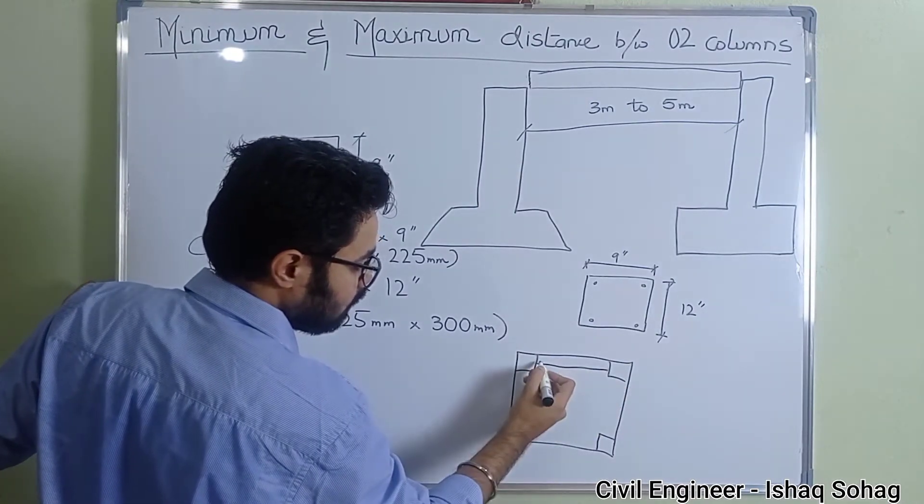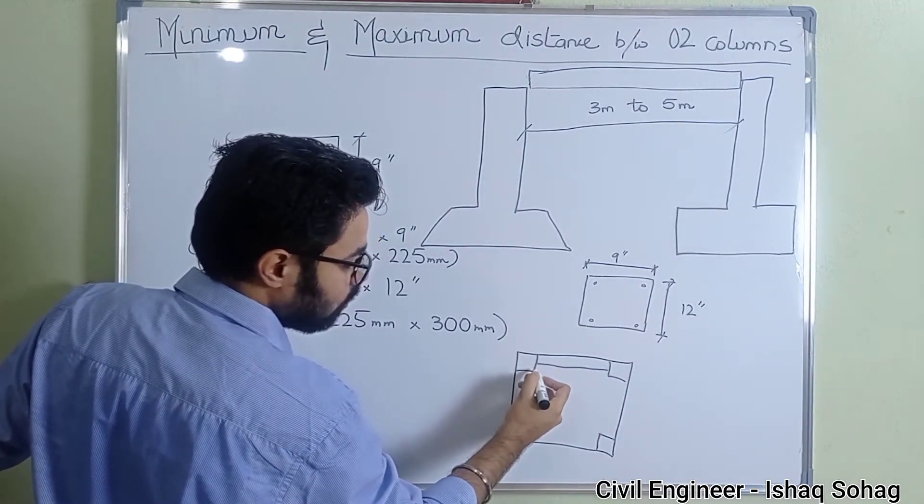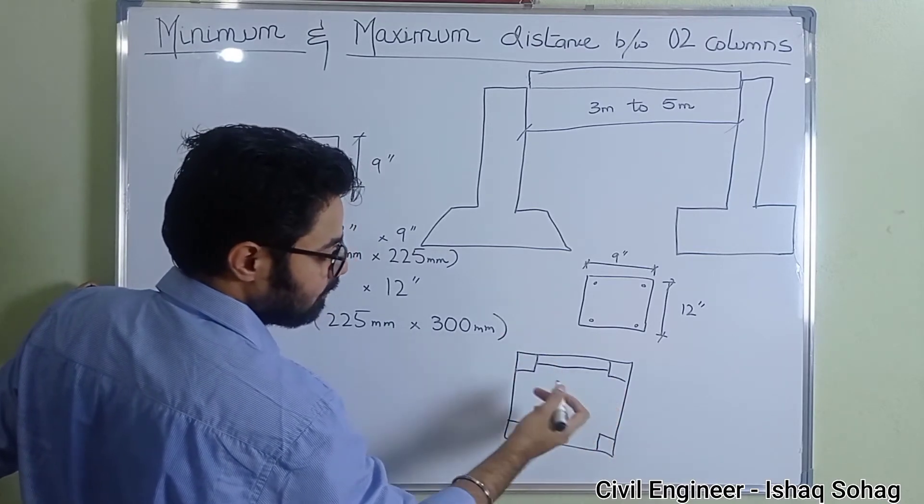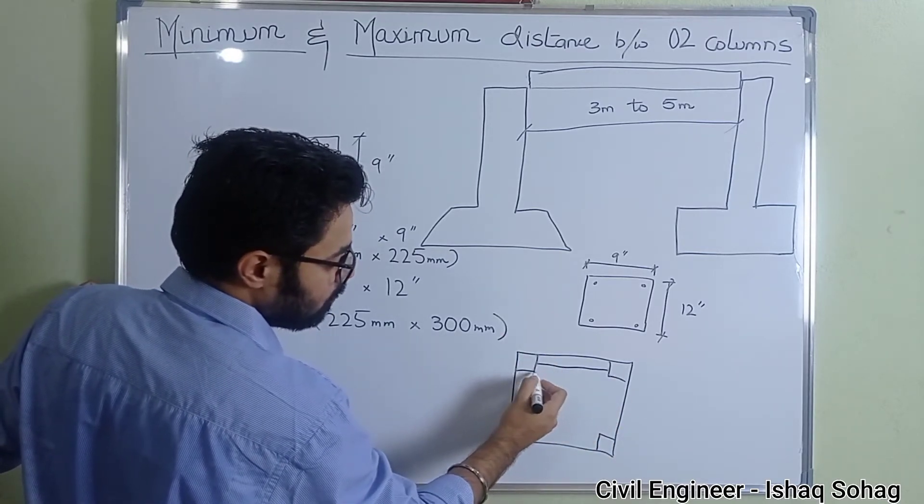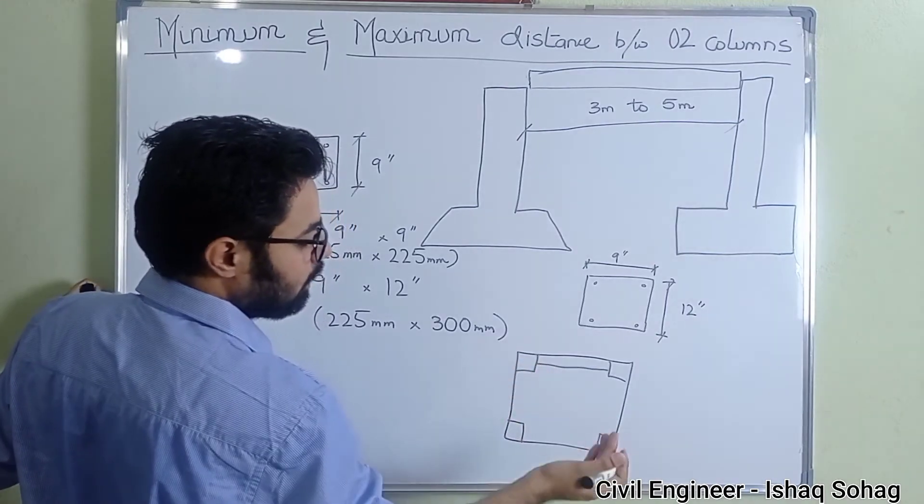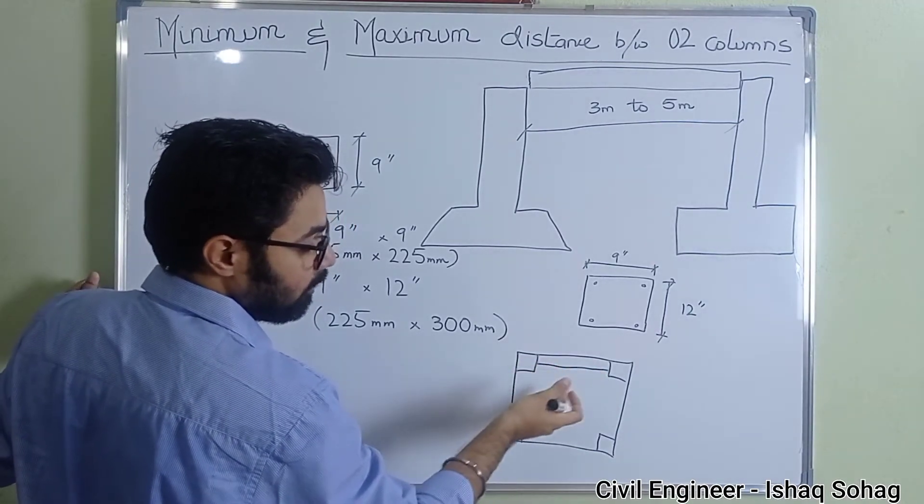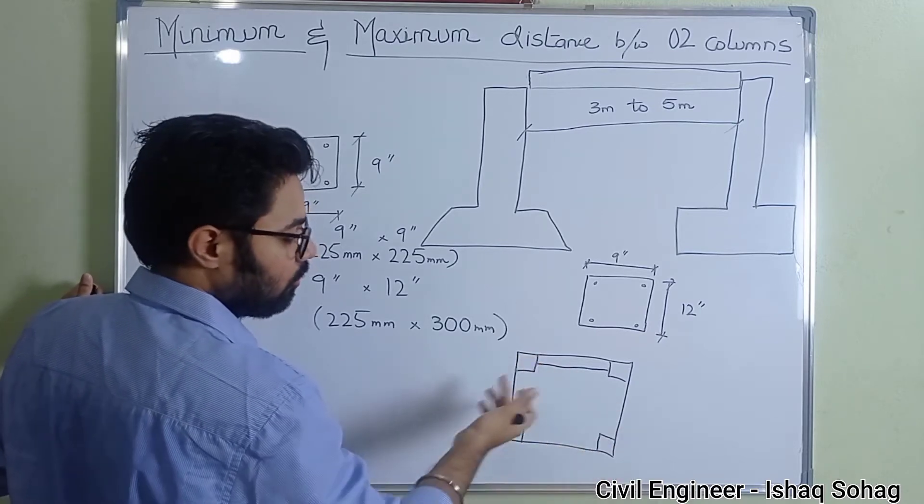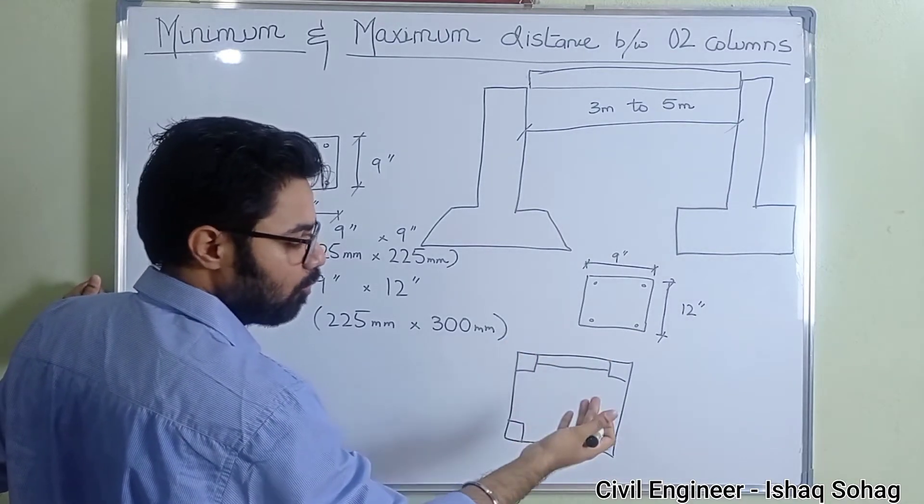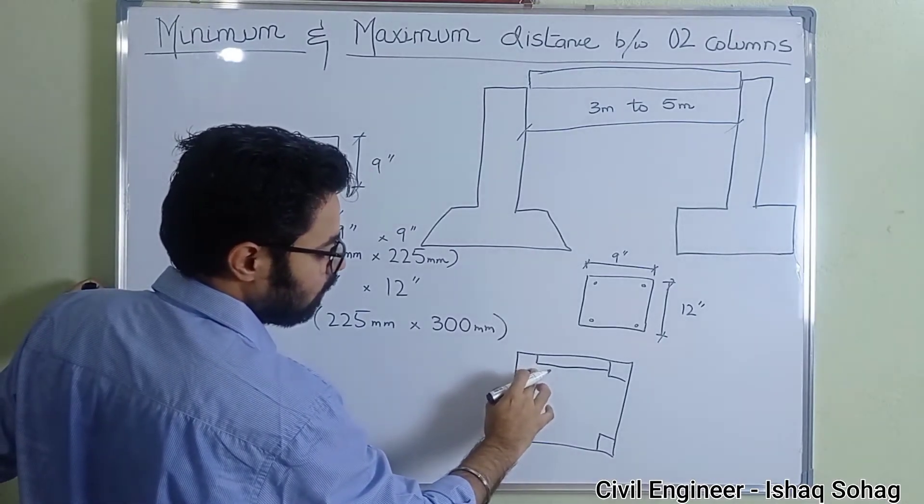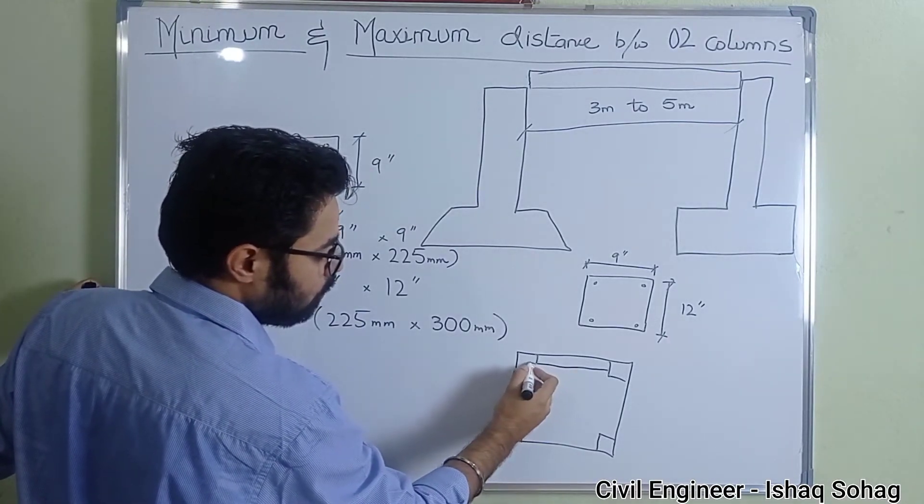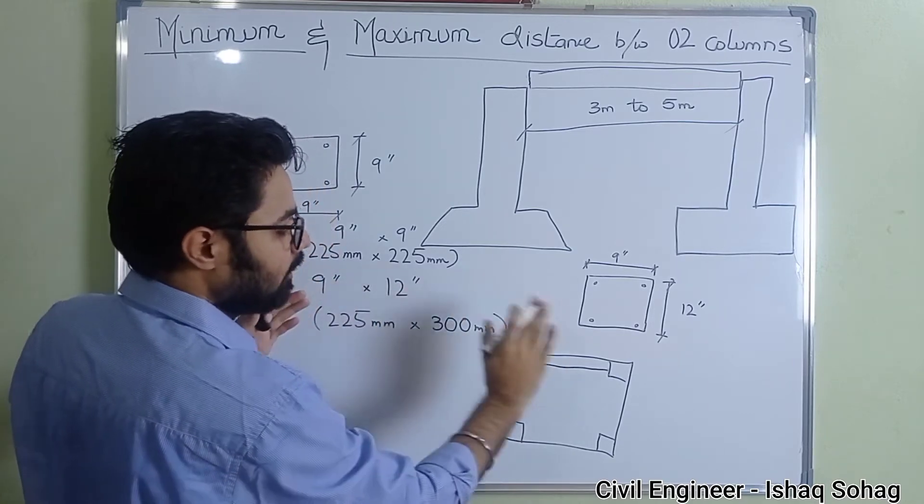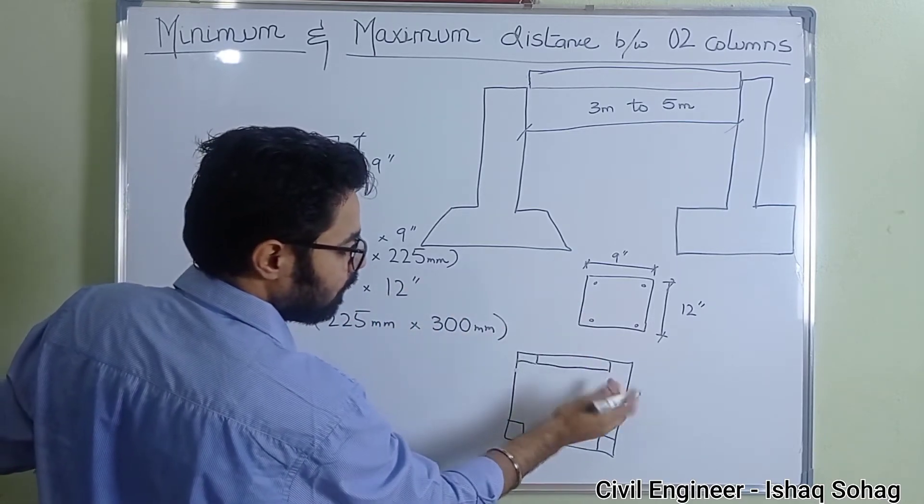So if this is our 9 inch wall thickness and we design column which is more than 225 millimeter or more than 9 inches, then you will encounter this problem. The column size will be bigger than the wall and in your bedroom you will not have enough space or it will not look good in your house or in your room. So this is the reason why we always give 225 so that it can be hidden inside the wall. I hope you have understood this.